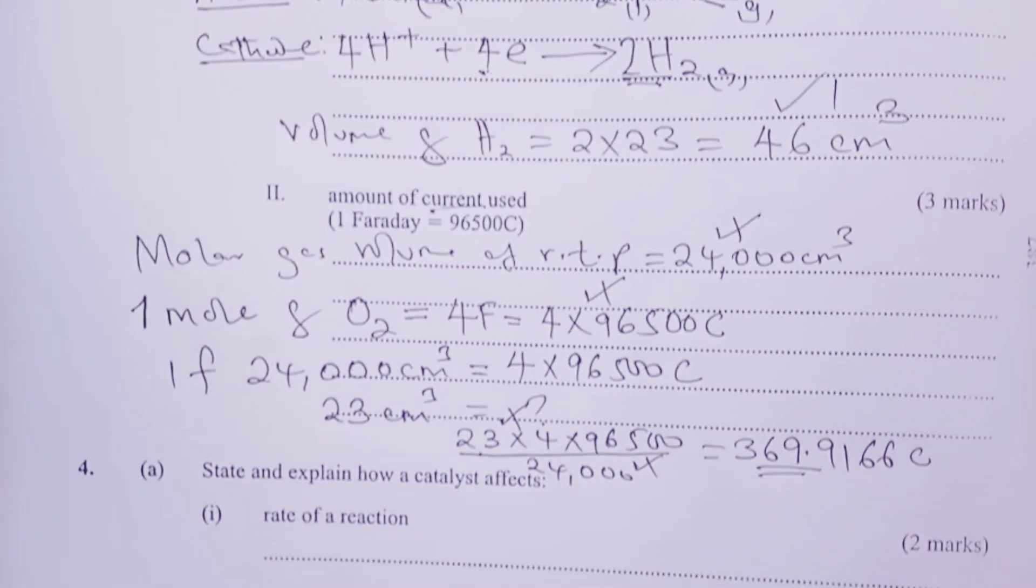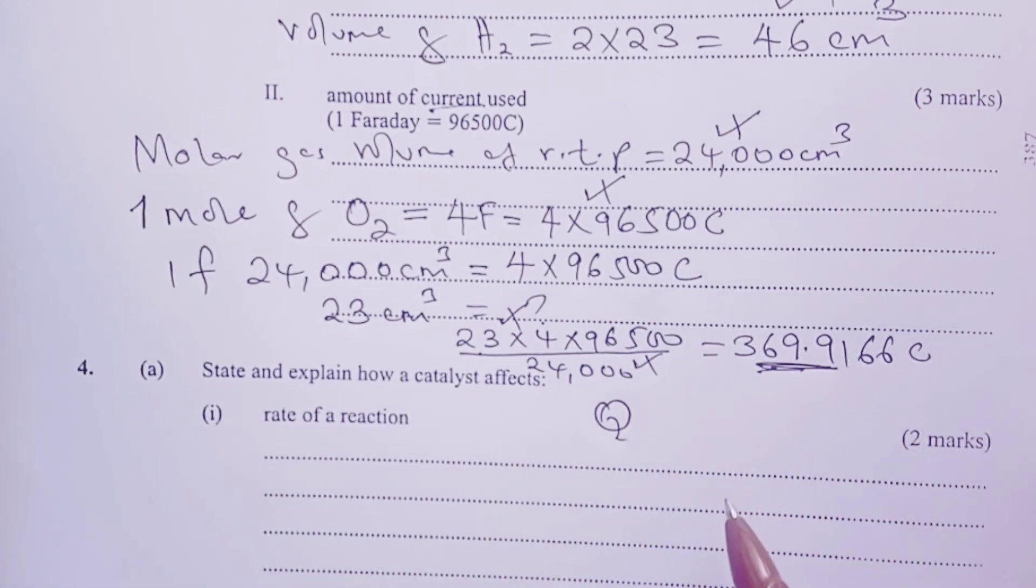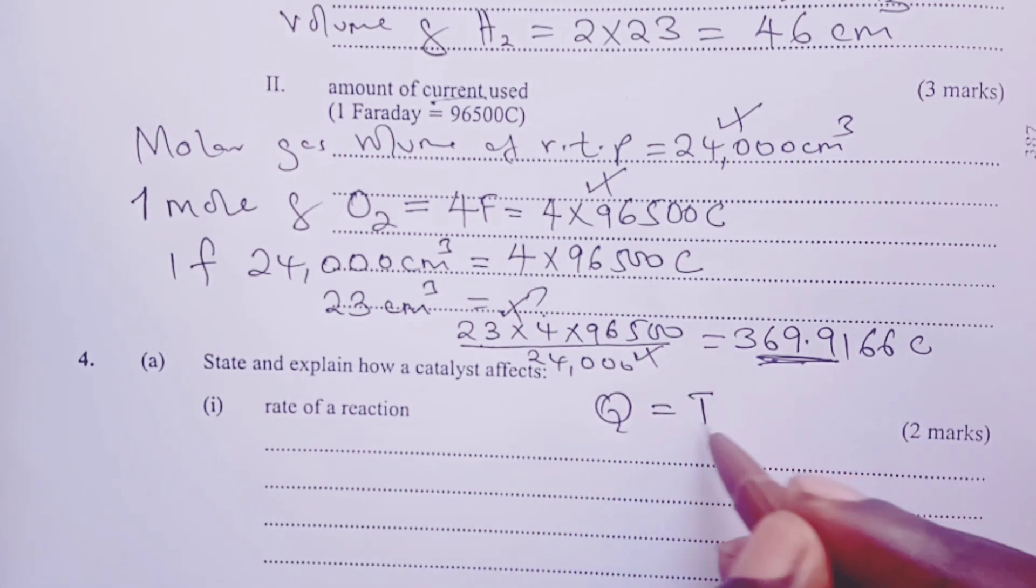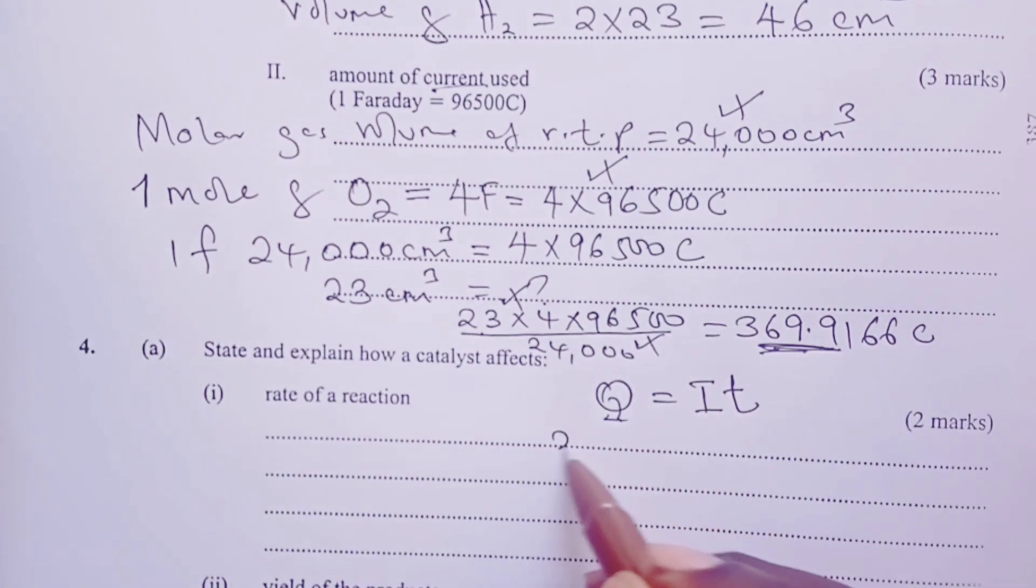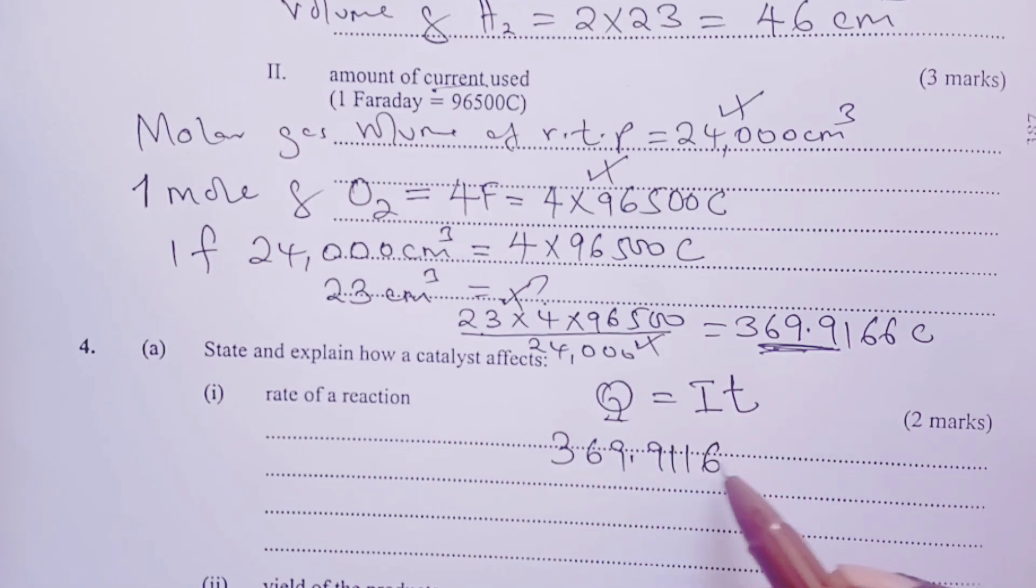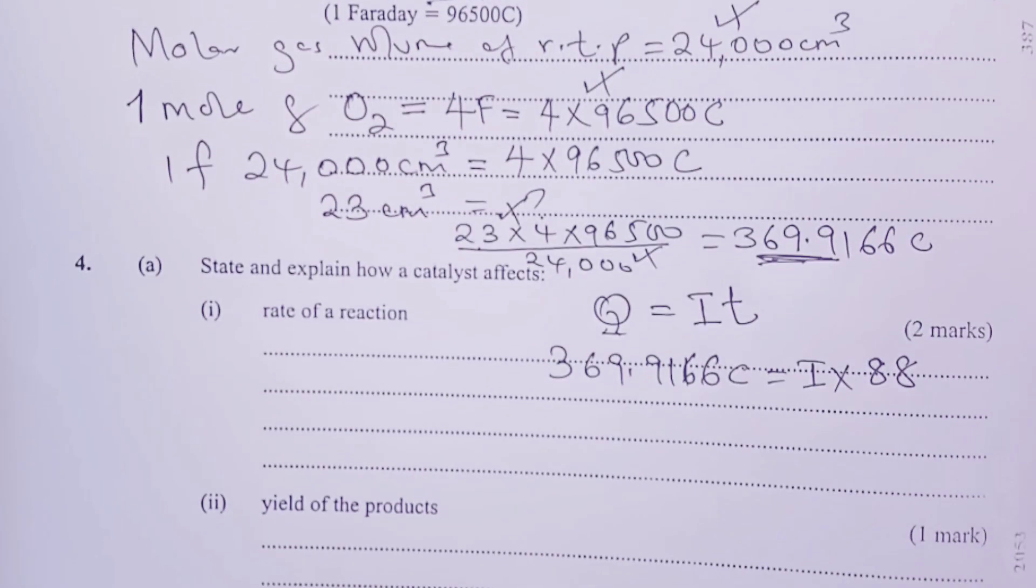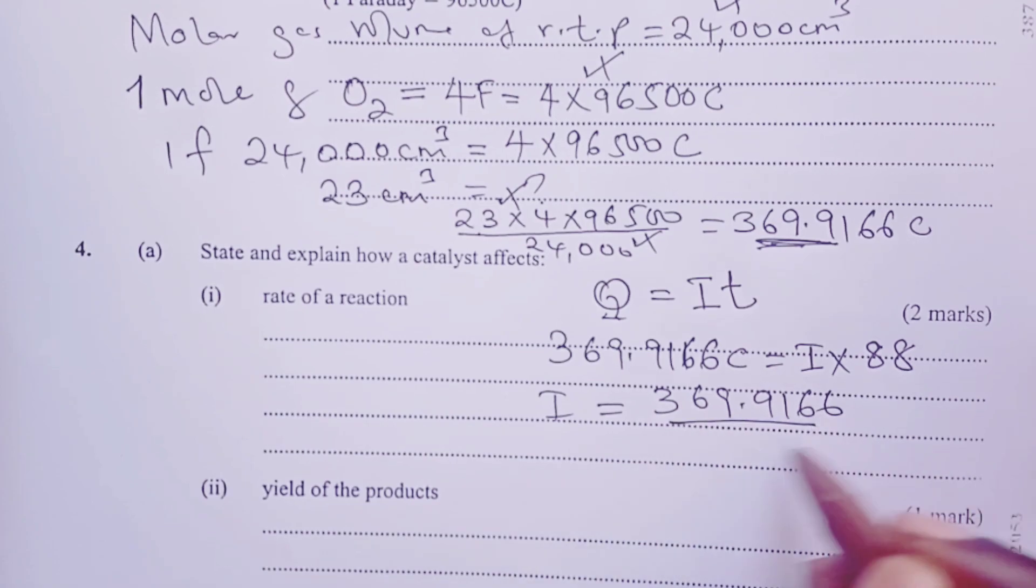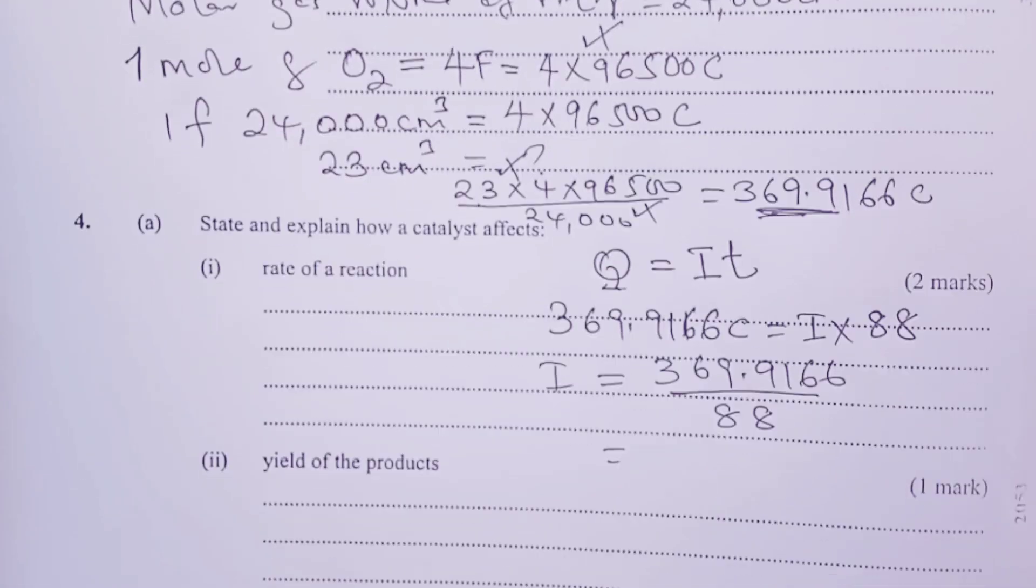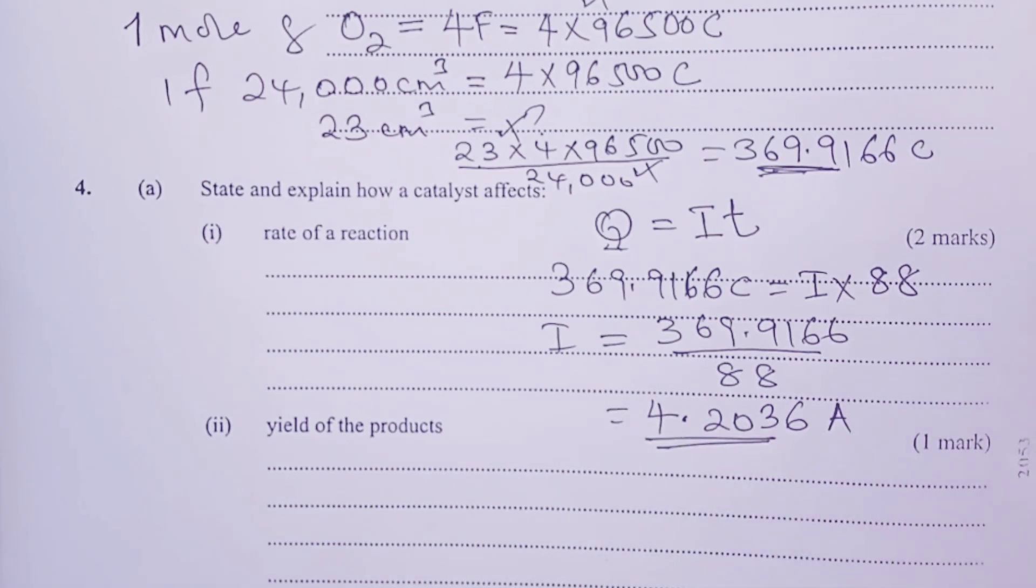This, by cross multiplication, would give 23 multiplied by four multiplied by 96,500 coulombs, then we divide by 24,000. That gives 369.9166 coulombs. This would be the quantity of electricity we would need to produce 23 cubic centimeters of oxygen. Then, moving on, we are asked to find amount of current used. So, we would now think of how do we get this quantity of electricity. Q is given by current I in amperes, multiplied by time in seconds. So, we found Q to be 369.9166, and current is what we are being asked to calculate, but time has been given as 88 seconds. So, to get I, we shall divide 369.9166 by 88. And, that gives us a current of 4.2036 amperes. That's the answer to our question.